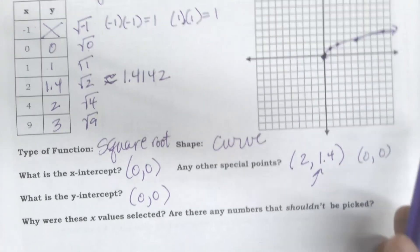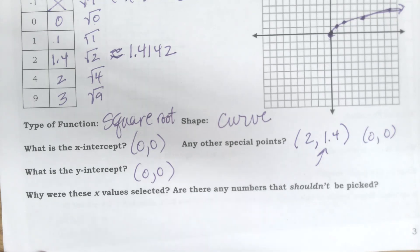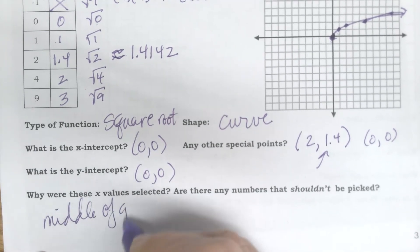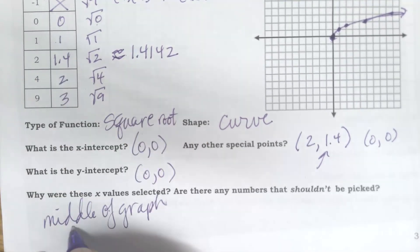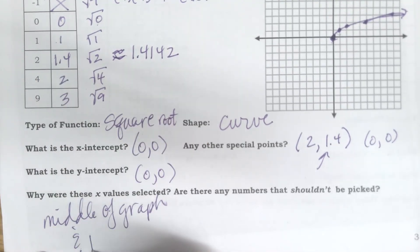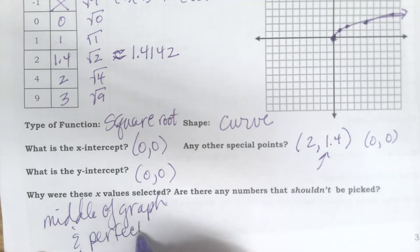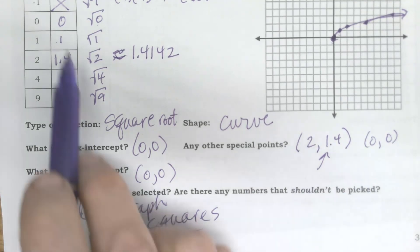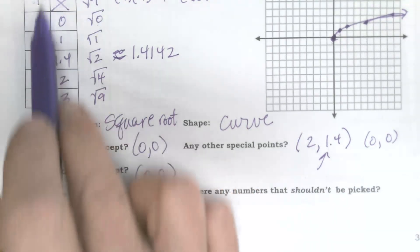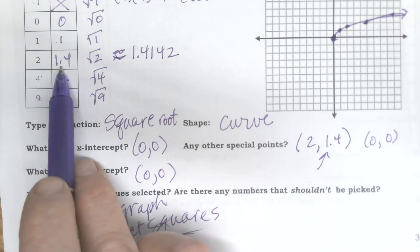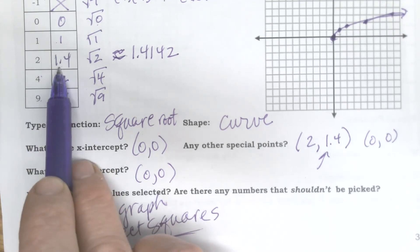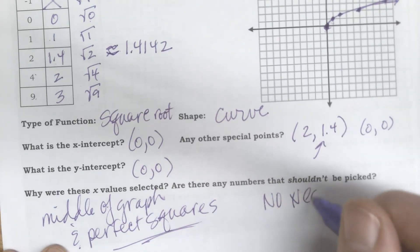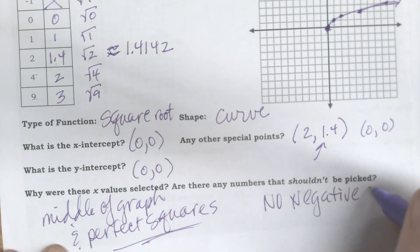But really other than that, I don't know. Maybe the 0, 0 is the only real special one because that's kind of that end point of this graph. Everything else kind of works. So why were these values selected? Again, I picked them because middle of the graph, just selected a bunch of values. And most of them I selected perfect squares, even though some of them weren't. I selected some pretty perfect squares, so that's why I would pick those. If it's a square root, I'm going to select points that are perfect squares. 1 was good, 4 was good, 9 was good, 2 was not good.